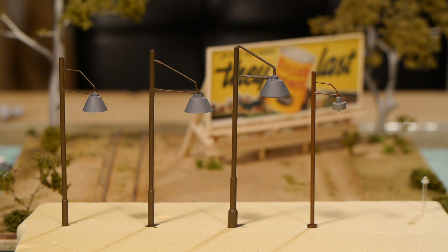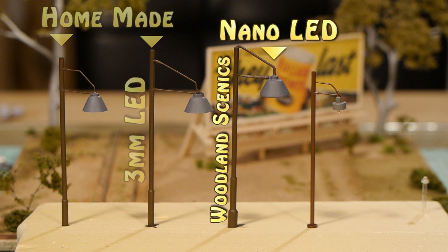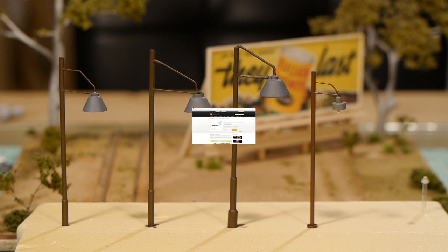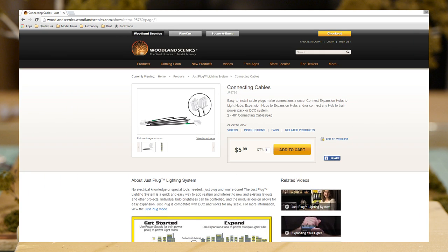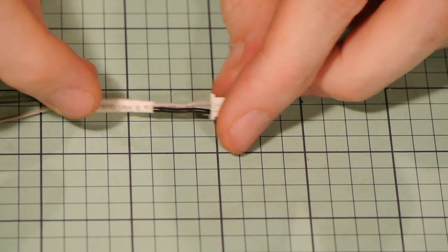Options for connecting it to the Woodland Scenics Just Plug lighting system would be either to use the Woodland Scenics Nano LEDs like I've used here. Additionally for your own homemade lights like the one I just made, you can purchase the connecting cables from Woodland Scenics which will give you two plugs. Then just simply connect your light to one of the plugs.